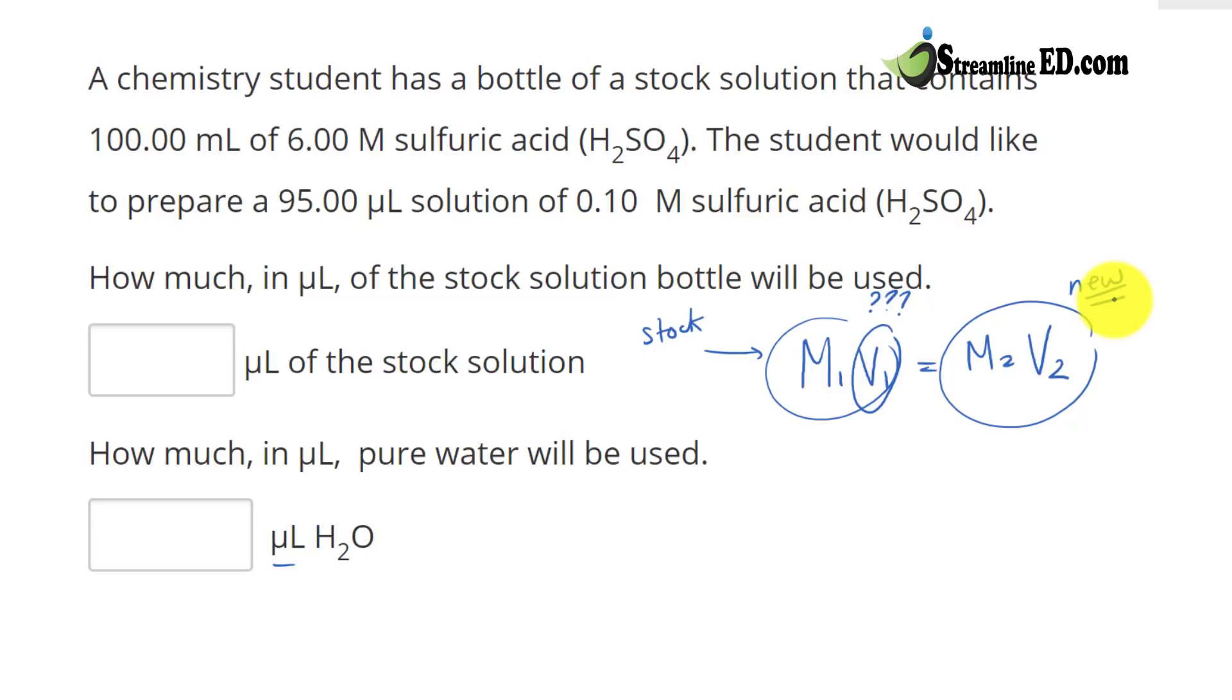And if we read this problem, you have to be careful. We have to pay attention. For example, a chemistry student has a bottle of a stock solution that contains 100 milliliter of 6.00 molarity of sulfuric acid.